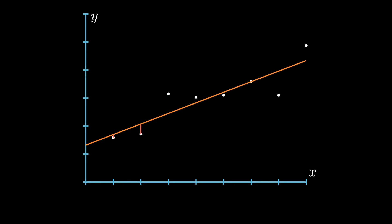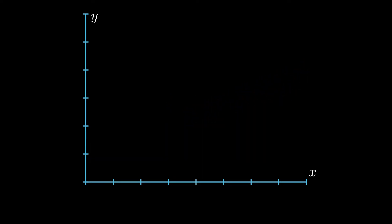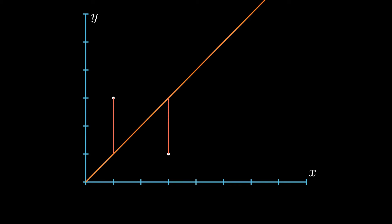But how do we know if the line is any good? One idea is that we can check how far away each point is from the line, and then sum the errors to measure how good the line is. The problem with this is if one error is positive and another is negative, when we take the sum the error would be zero.